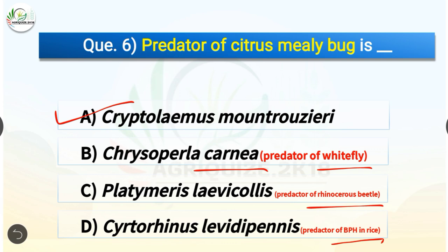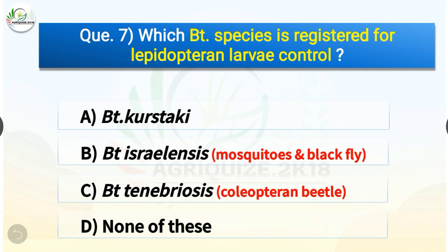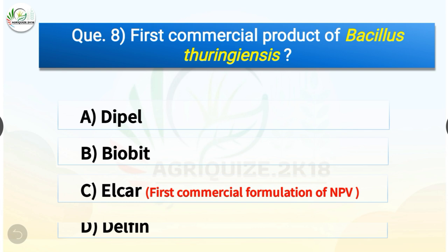Question number seven: which Bt species is registered for lepidopteran larvae control? Options are Bt kurstaki, Bt israelensis, Bt tenebrionis, or none of these. The correct answer is option A, Bt kurstaki. Bt israelensis is for mosquitoes and black fly, and Bt tenebrionis is for coleopteran beetles.